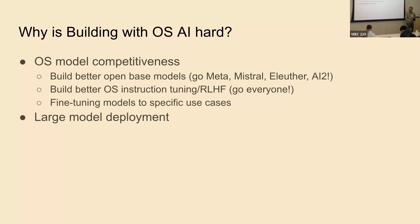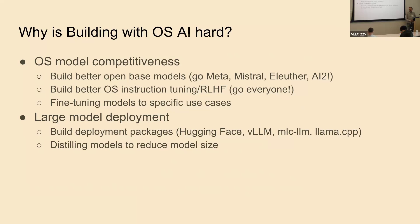Another problem that people encounter is large model deployment. If you have a 70B model, which is what you need to be competitive in some cases, especially if you want a multipurpose model, that can be hard. There's ways to solve this, and people are building efficient deployment packages, both for deploying on GPUs quickly and also deploying on your local machines.